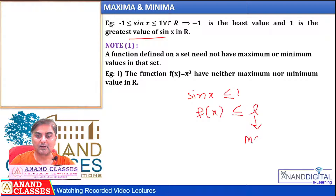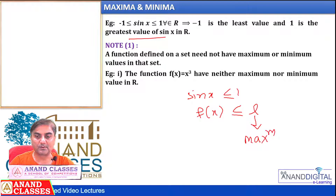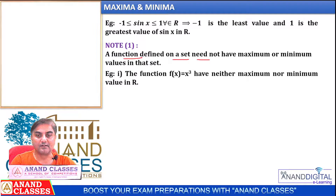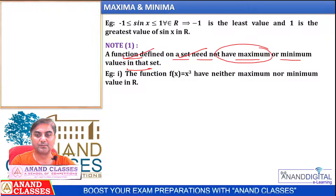So this l is the absolute maximum or global maximum. Note that f(x), a function defined on a set, need not have maximum or minimum values in that set. It is not necessary that if a function is defined on some set, it will have a maximum or minimum value in that set.